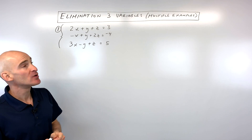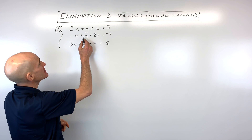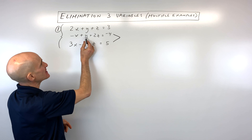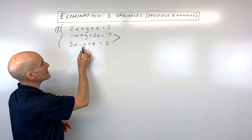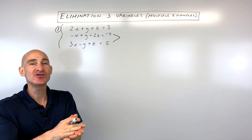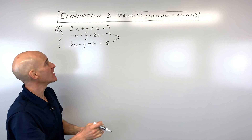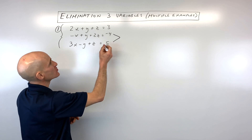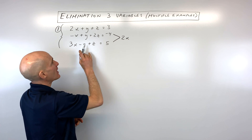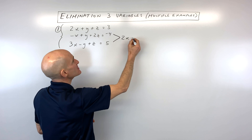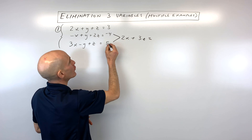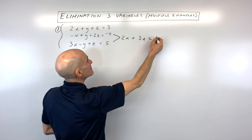What I'm going to do is add the second and the third equation together, because this is a positive 1y and this is a negative 1y — when we add those together, the y's are going to cancel. So negative 1x plus 3x gives us 2x, y minus y is 0, 2z plus 1z is 3z, and negative 4 plus 5 is 1.